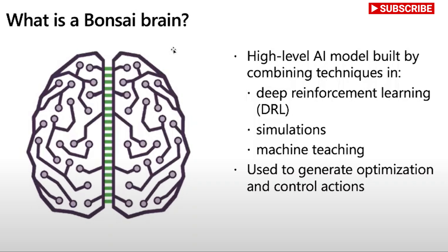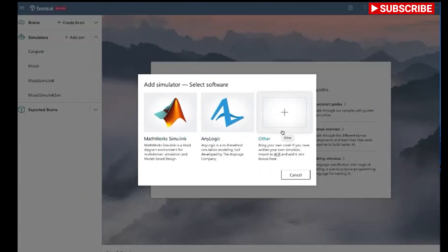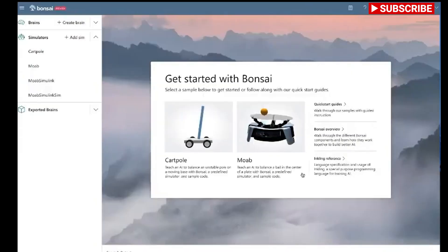The final trained brain that you export can control and optimize your real-world systems. When you make significant changes to your training curriculum, Bonsai creates a new version of your brain. You can then compare your new brain with previous versions in training results, Inkling code, and the predictions of your latest version.